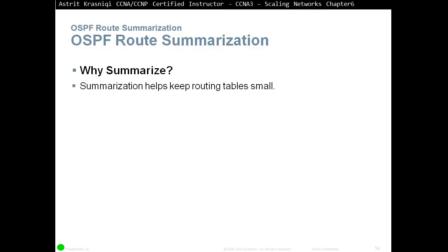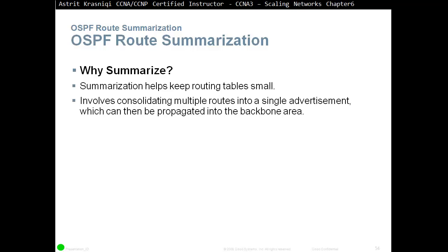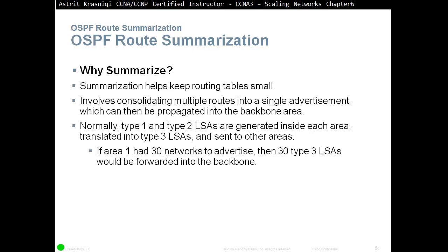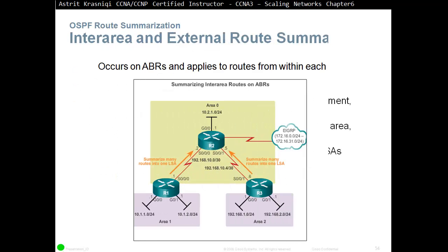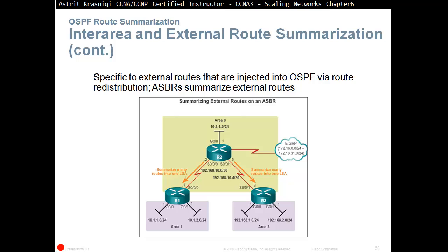Configuring OSPF route summarization. Why do we need to summarize? We summarize to keep our routing tables small. It involves consolidating multiple routes into a single advertisement which can be propagated into the backbone area. Remember, the only place you can summarize in OSPF is at the Area Border Router (ABR) or ASBR — Autonomous System Boundary Router. Normally type 1 and type 2 LSAs are generated inside each area and translated into type 3 LSAs sent to other areas. If area 1 has 30 networks to advertise, then 30 type 3 LSAs would be forwarded into the backbone area — so we want to summarize. External routes injected into OSPF by route redistribution are summarized by the ASBR.